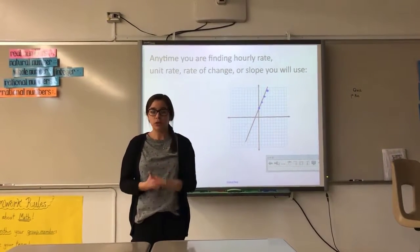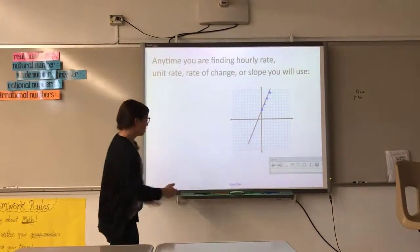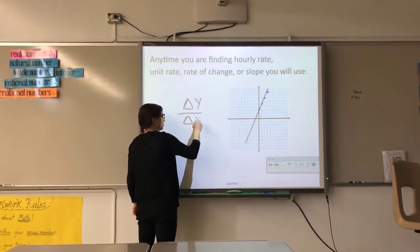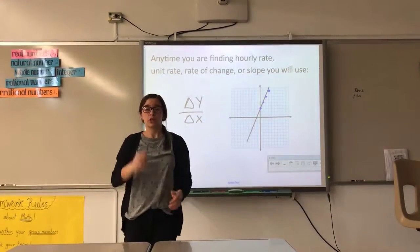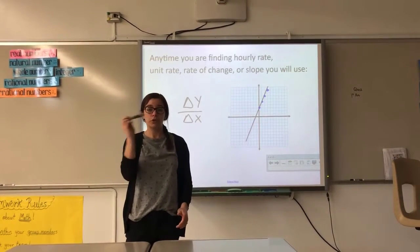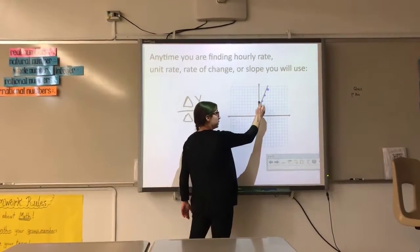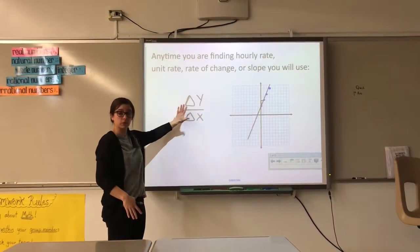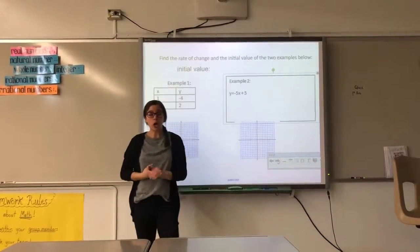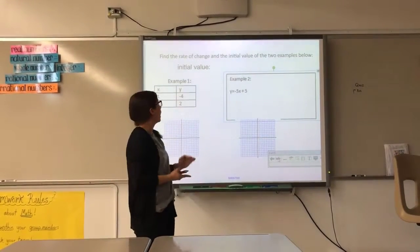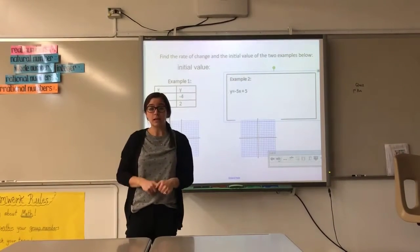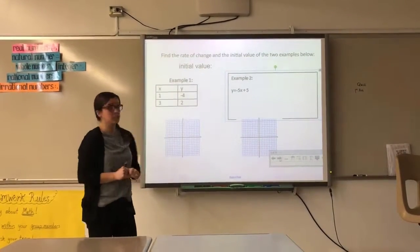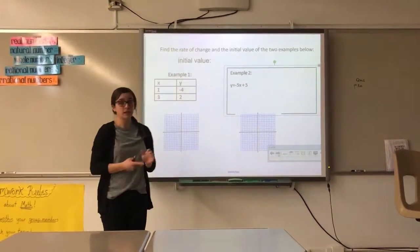Anytime you hear rate of change, unit rate, or slope, you're going to start with Delta Y over Delta X — your vertical change over your horizontal change — how many am I going up compared to how many I'm moving to the right. This is the most important thing to always write down. When we're talking about initial value, we're talking about our y-intercept. So our first example: find the rate of change and the initial value.